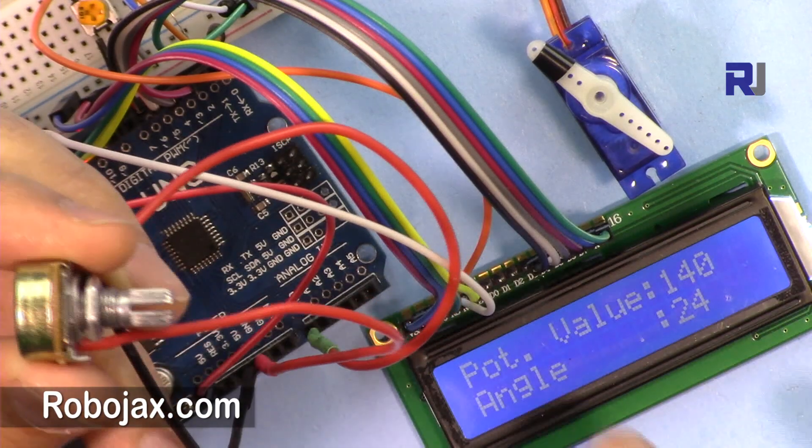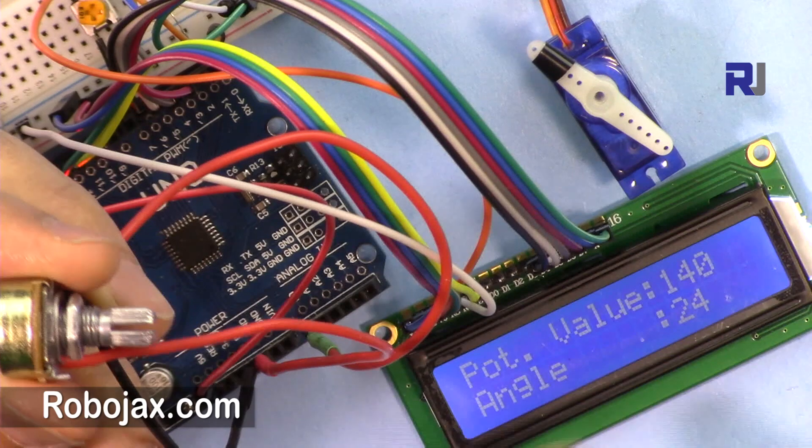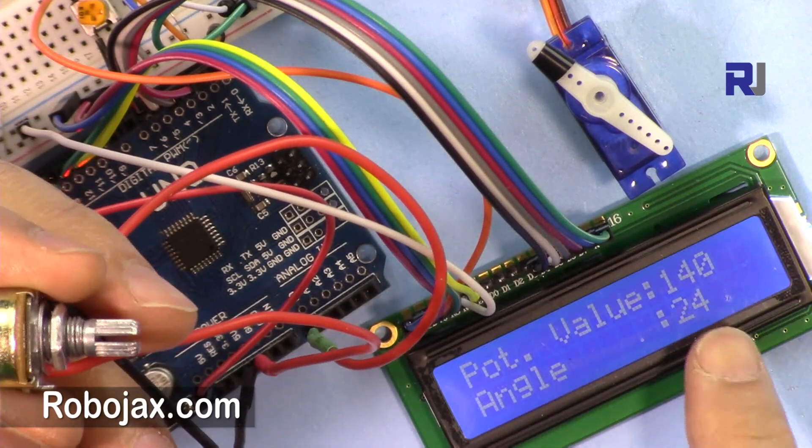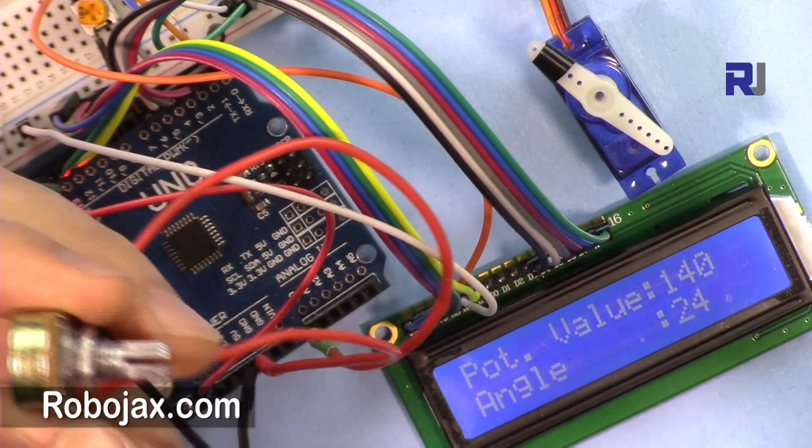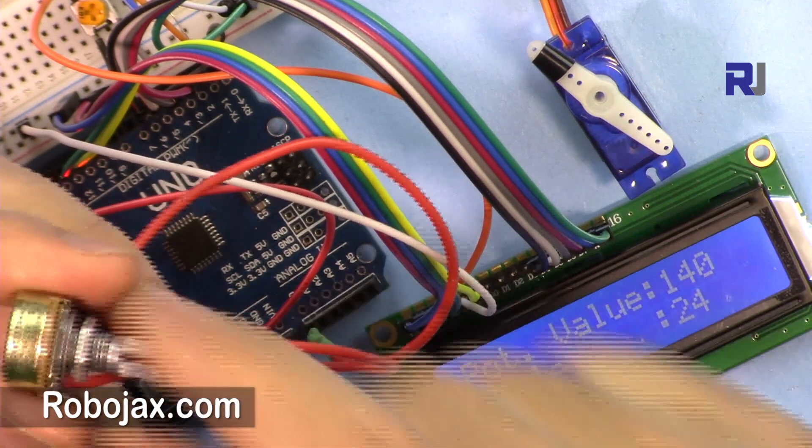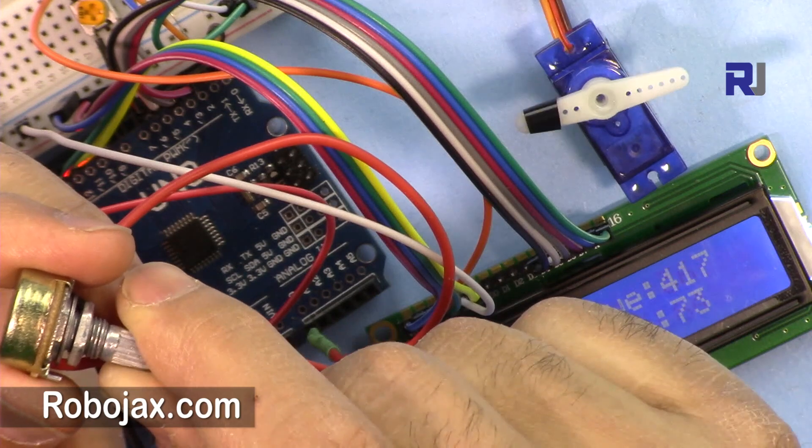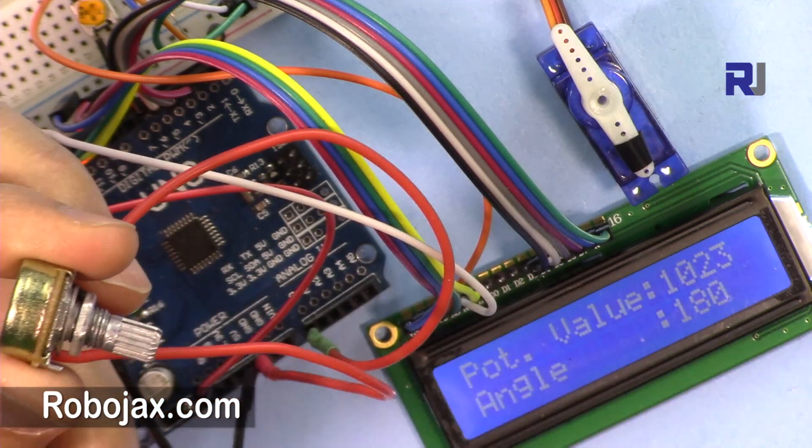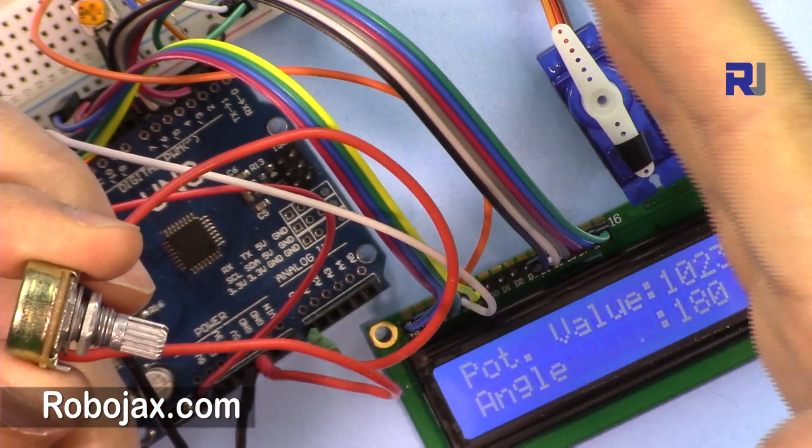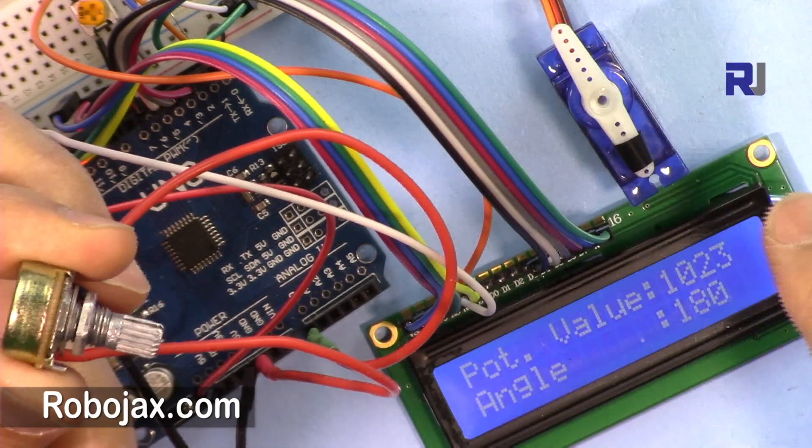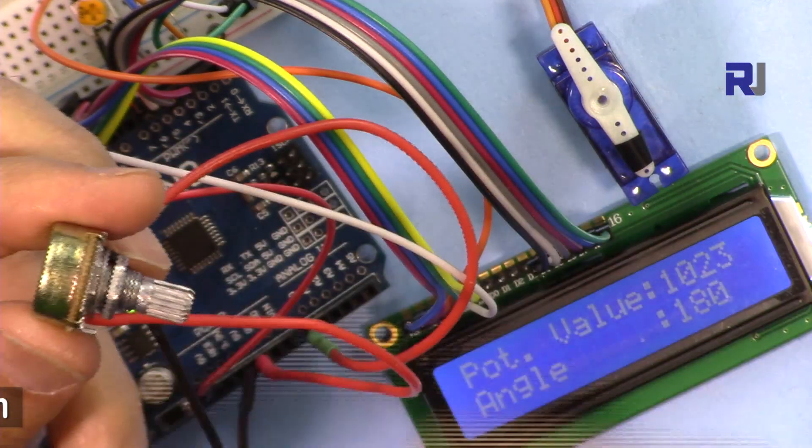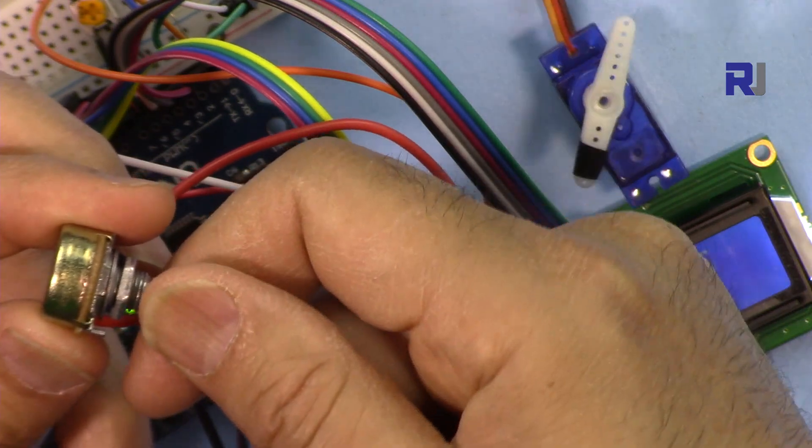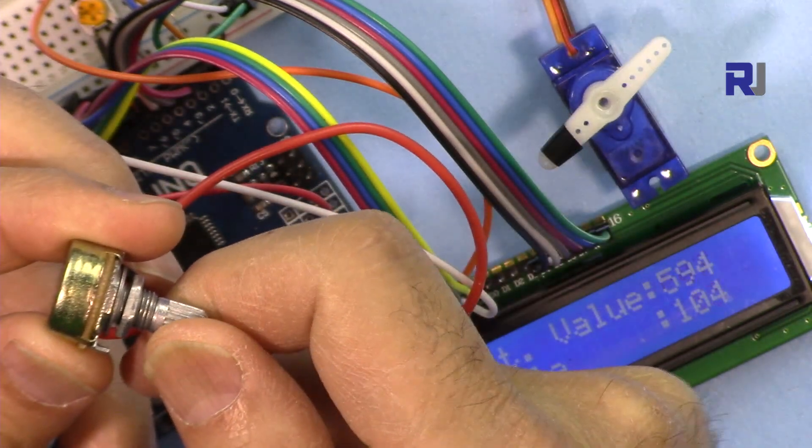Now this is a demonstration again, even though I showed you at the beginning, but to just clarify. Here now it shows 140 degrees at 24 degrees, and the value of potentiometer is 140. So if I rotate it to the right, as you can see, fully now it's at 180 degrees on the other side, and the maximum value is 1023. And I went clockwise. If I go counterclockwise on this side, as you can see, the value is changing.